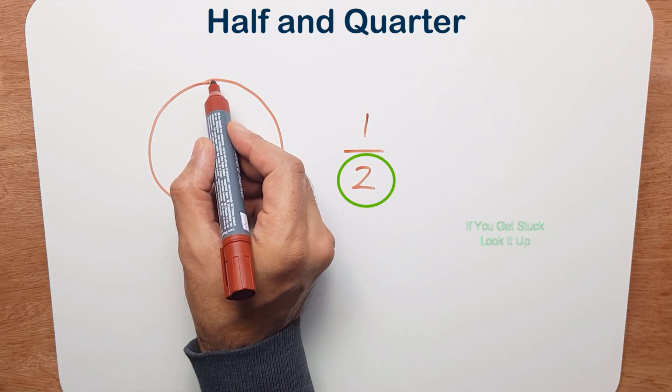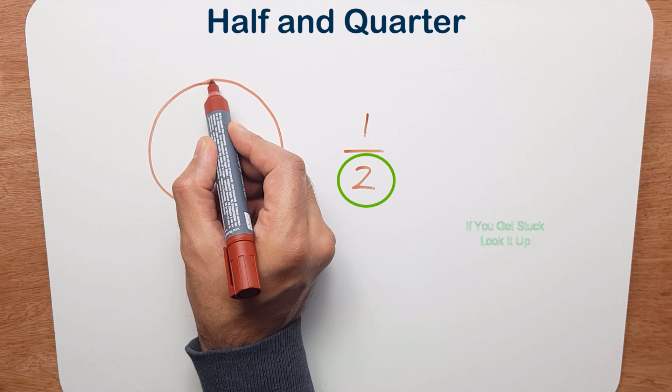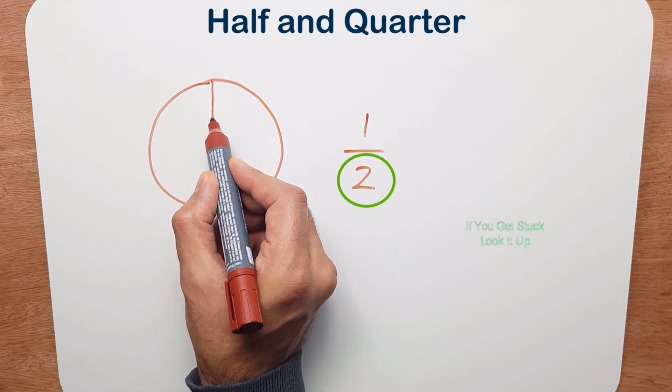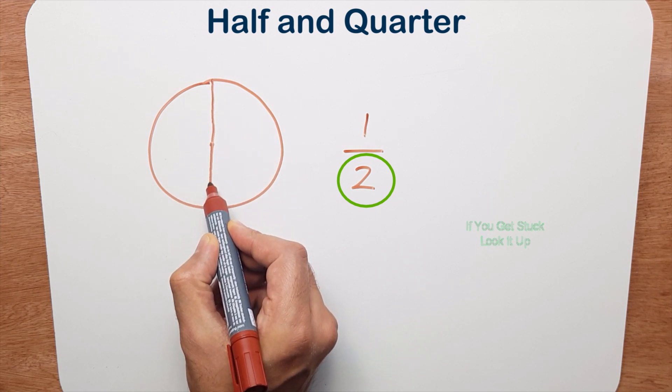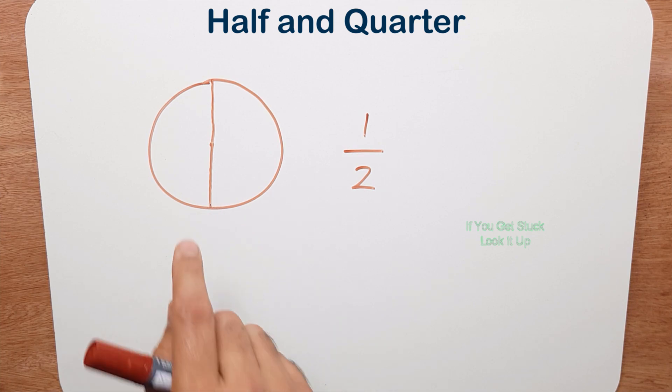It's only two, so all I need to do is carefully start from the top, all the way down, through the middle and continue on. Now I've cut this pizza into two equal pieces.